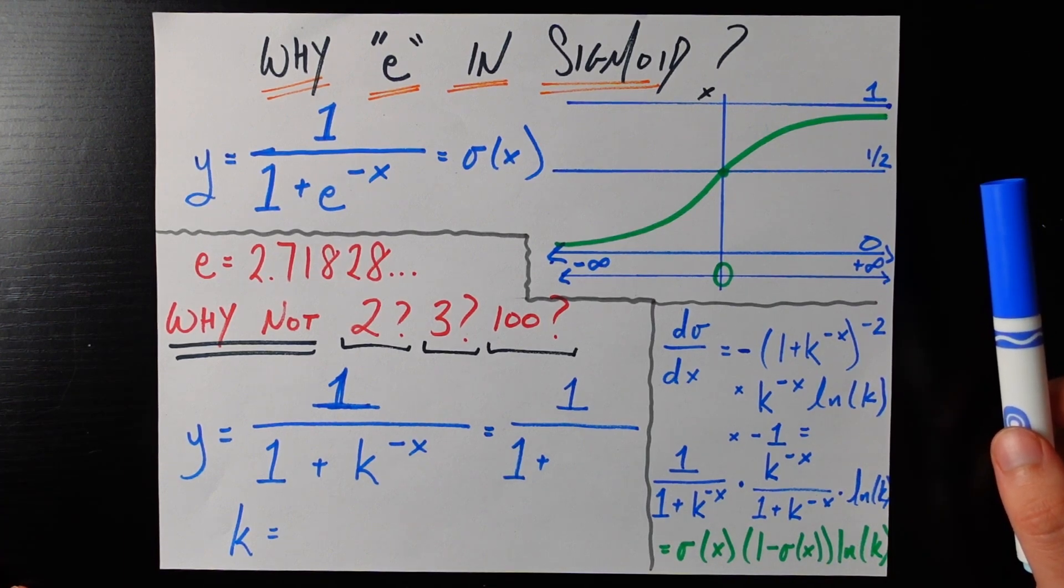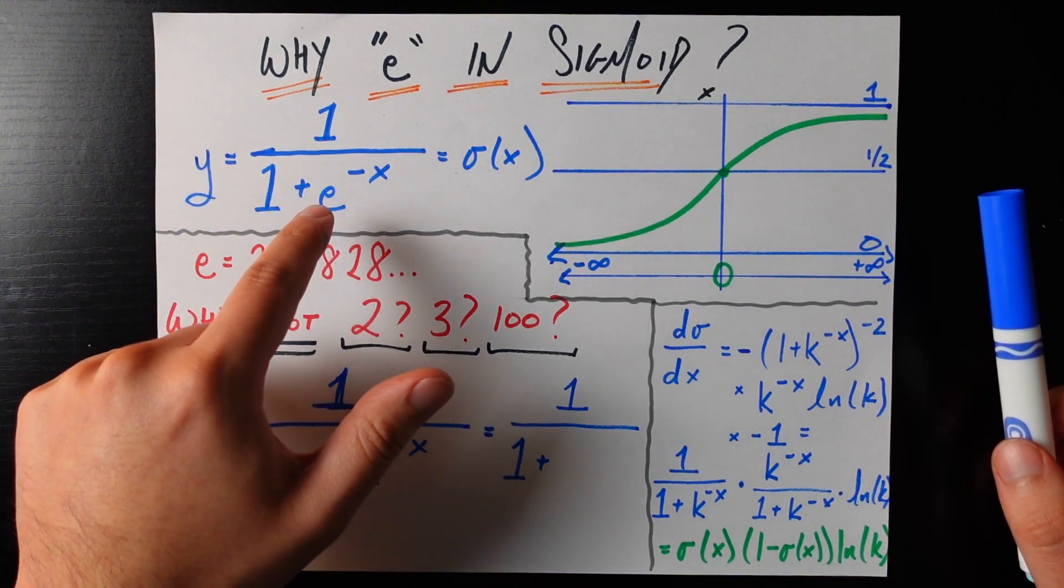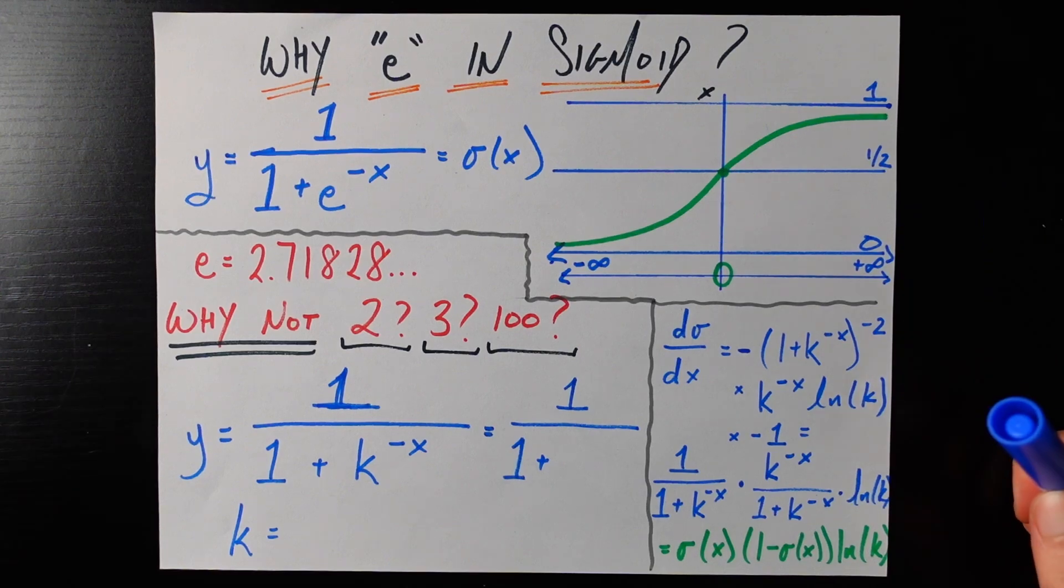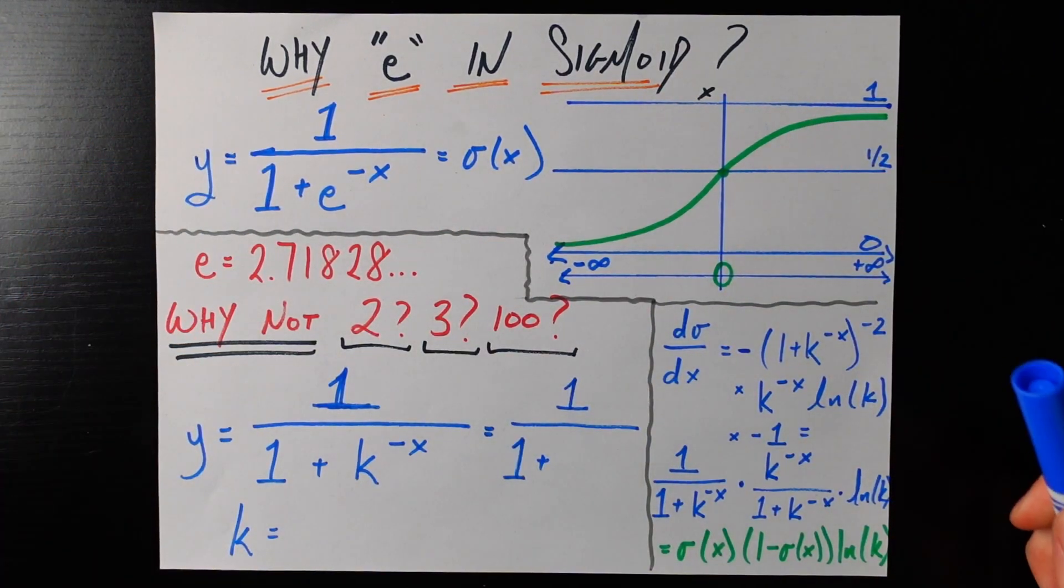So as a reminder the sigmoid function is pretty simple. It's y equals one over one plus e to the power of negative x and a lot of times we will write that as sigma of x to be more obvious that this is the sigmoid function.